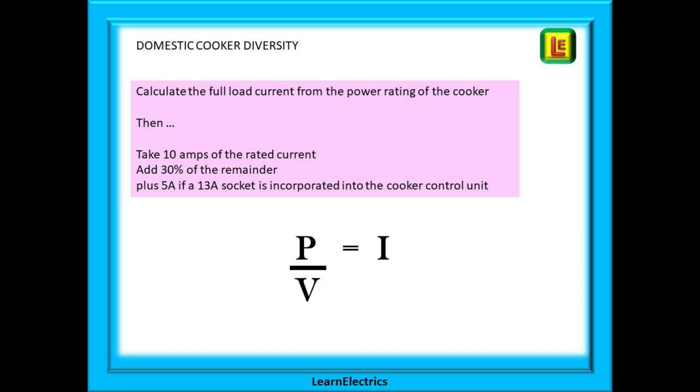I begin by writing down what each circuit breaker is being used for in the consumer unit and make any relevant notes about that circuit. If our first circuit was a cooker circuit, I would want to know not only the size of the breaker but also the power rating of the actual cooker. Once I know this, I can calculate the full load current for the cooker by using the power law equation. Power in watts divided by the nominal voltage of 230 volts will give me the current in amps.